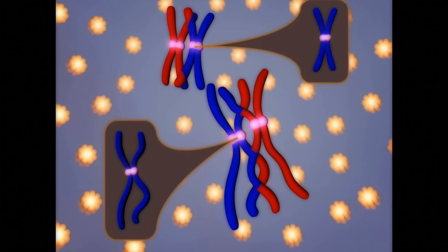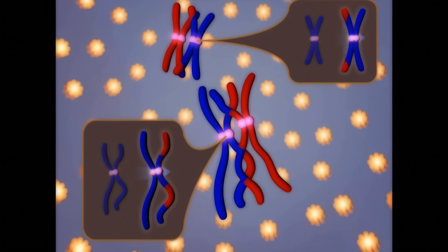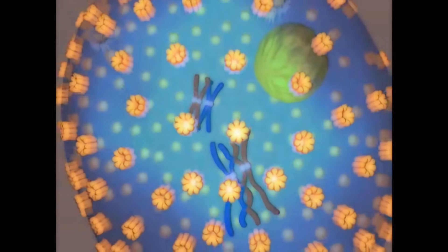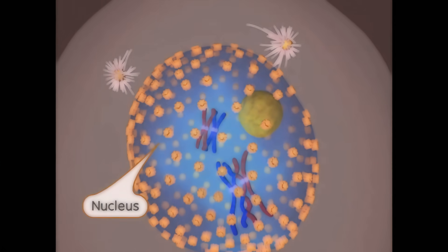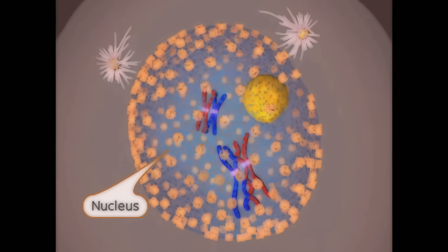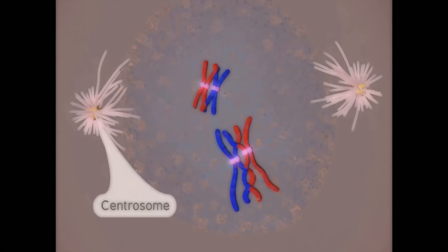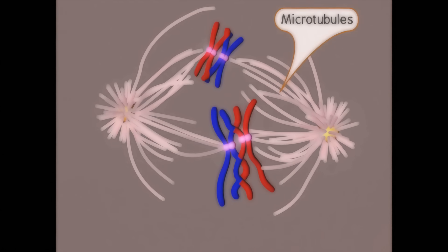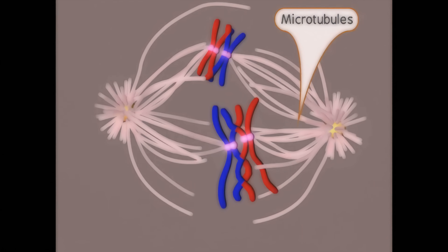This is one of the reasons why no two siblings, aside from twins, are genetically identical. There are several more key steps in prophase I. The nuclear membrane begins to break down. Then, the two centrosomes migrate to opposite ends of the cell and microtubules appear. The microtubules then attach to the chromosomes.